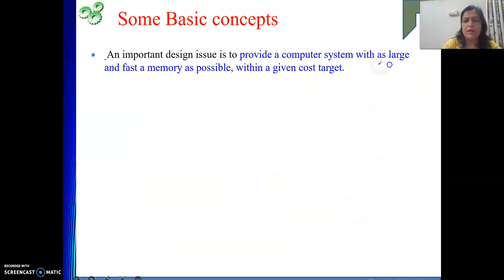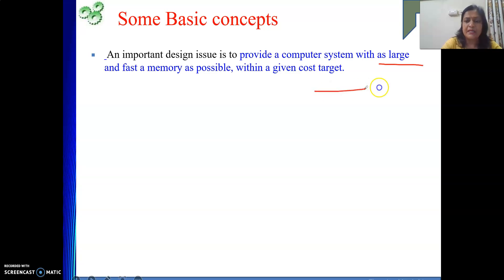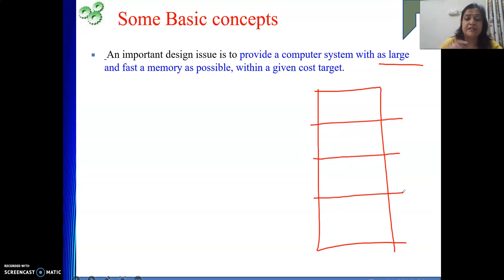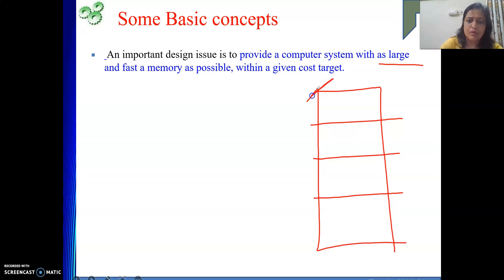This is how the faster design is achieved. Another goal is to have a large size memory. By having a larger size memory, we can keep more information in the memory, meaning more processes will be there. That means we can increase our degree of multiprogramming. If we increase our degree of multiprogramming, our throughput increases, because the processor will be busy always executing some process.